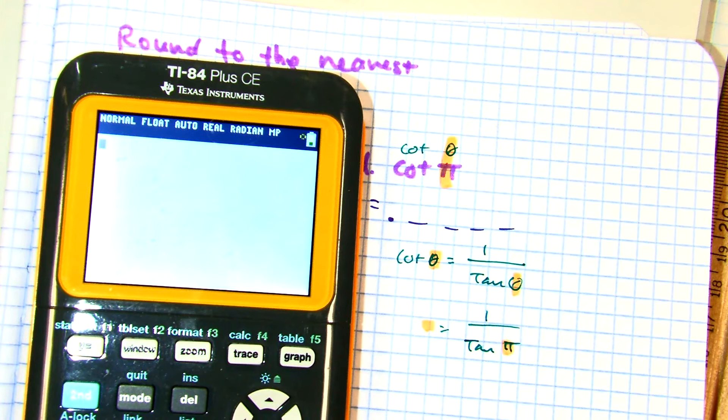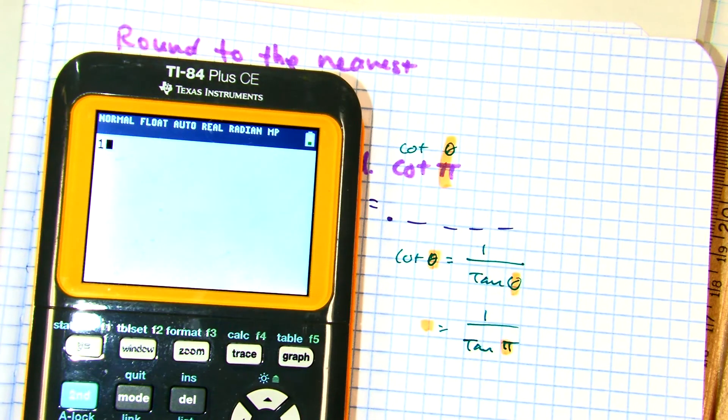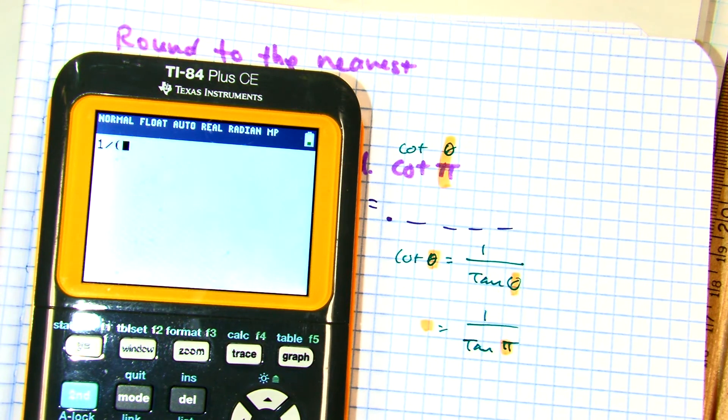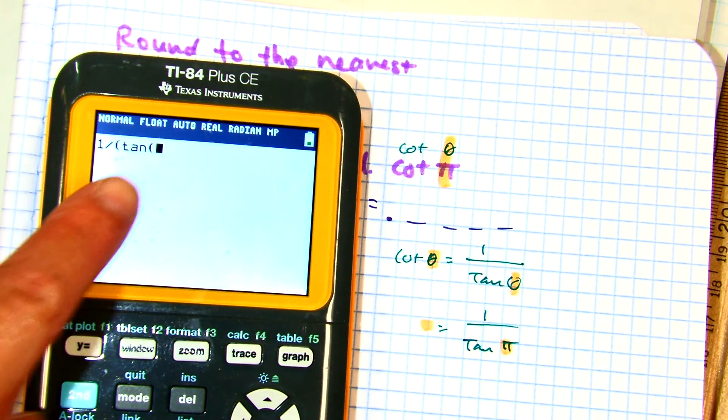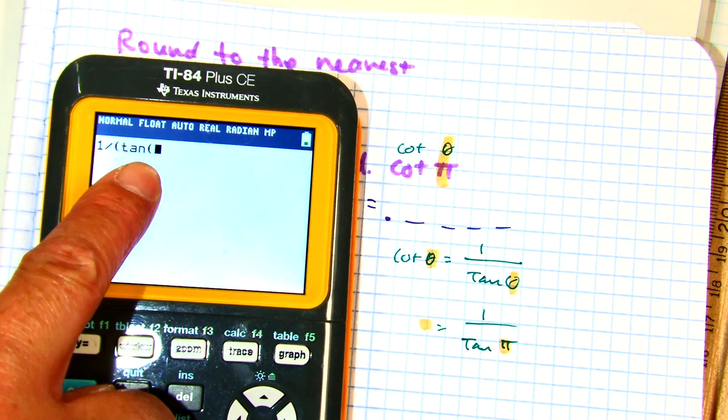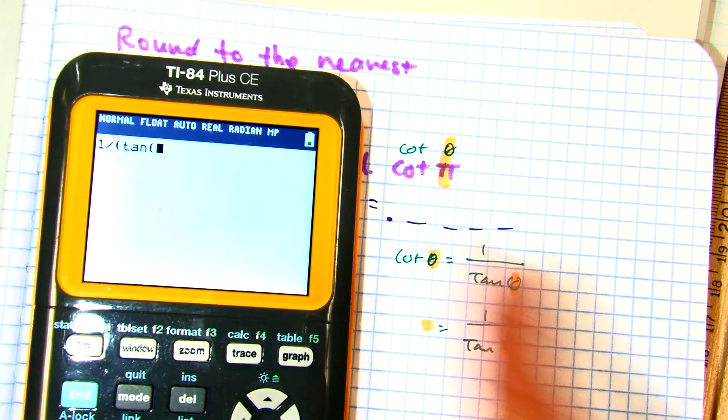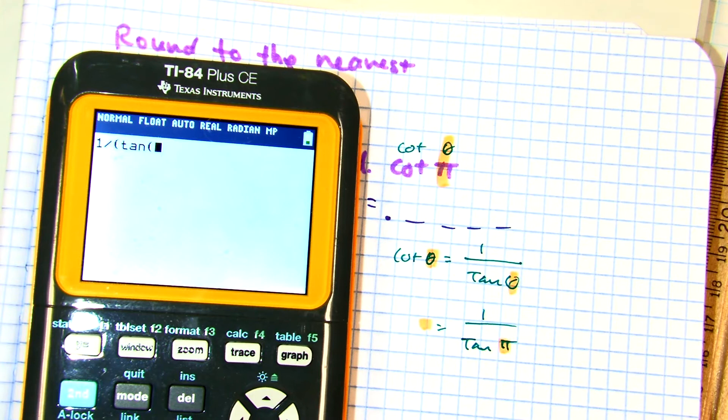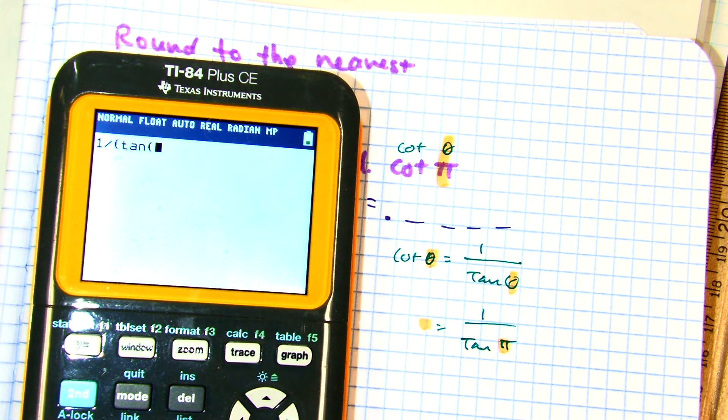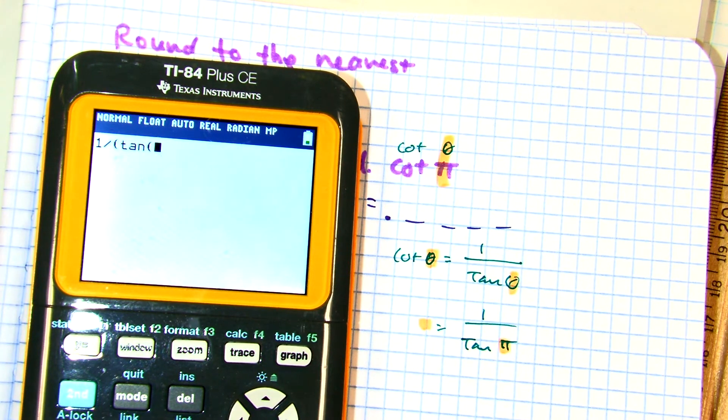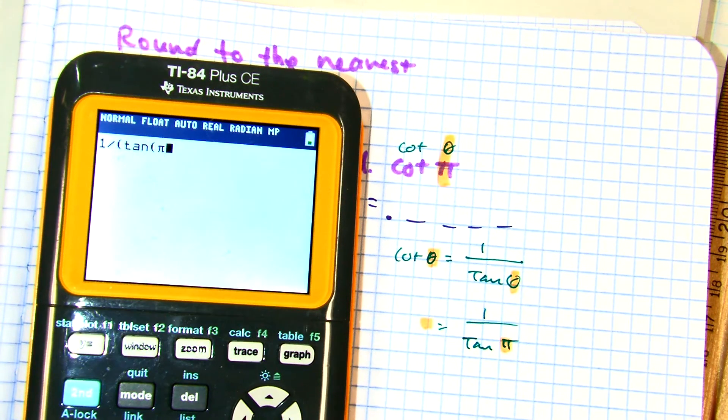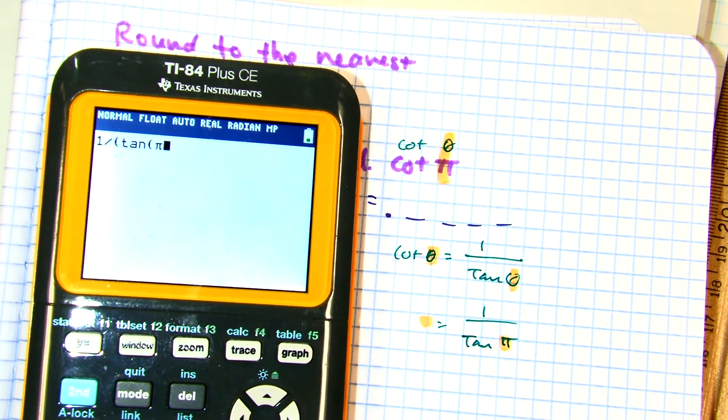So, we can put that in our calculator. 1 divided by extra set of parentheses. Tangent. Now, the calculator automatically opens another parentheses for me. So, that's your angle. And this angle is measured in radians. And they want me to have pi. Pi is next to your clear button. Right here in blue. So, I'm going to have to press second, up arrow. And then, double close the parentheses.